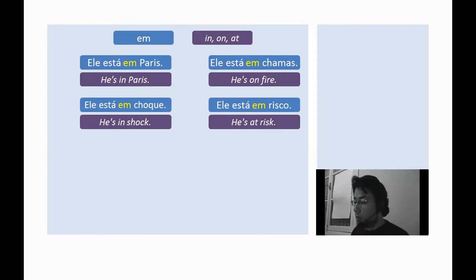Now, the preposition em. Em. Depending on the context, it can be translated as in, on, or at. Examples. Ele está em Paris. He is in Paris. Ele está em chamas. He is on fire. Ele está em choque. He is in shock. Ele está em risco. He is at risk.